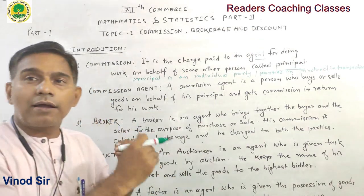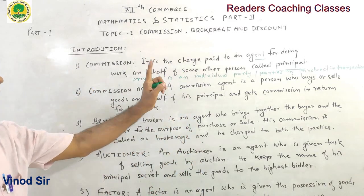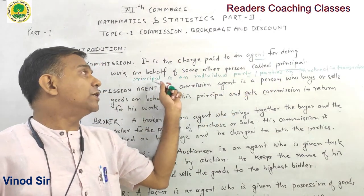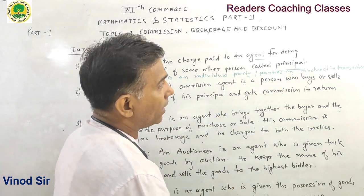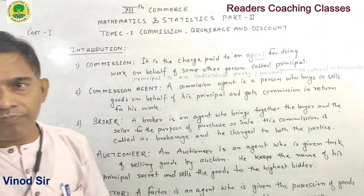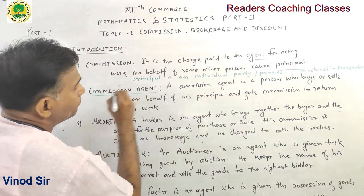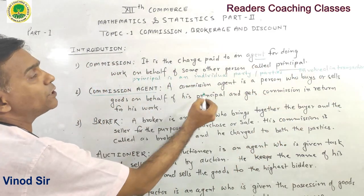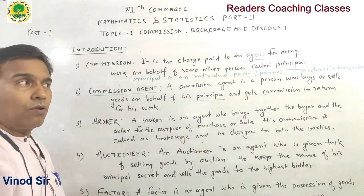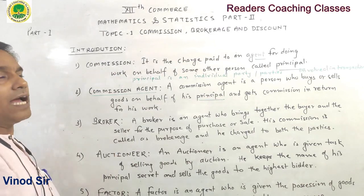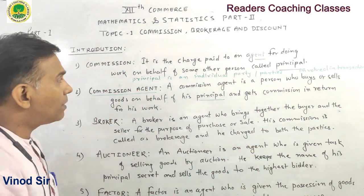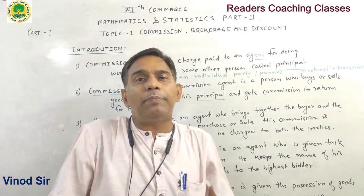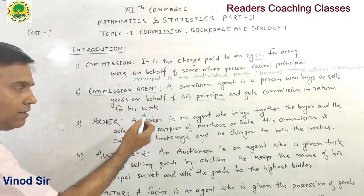A commission agent is a person who buys or sells goods on behalf of his principal. He gets commission in return for his work.